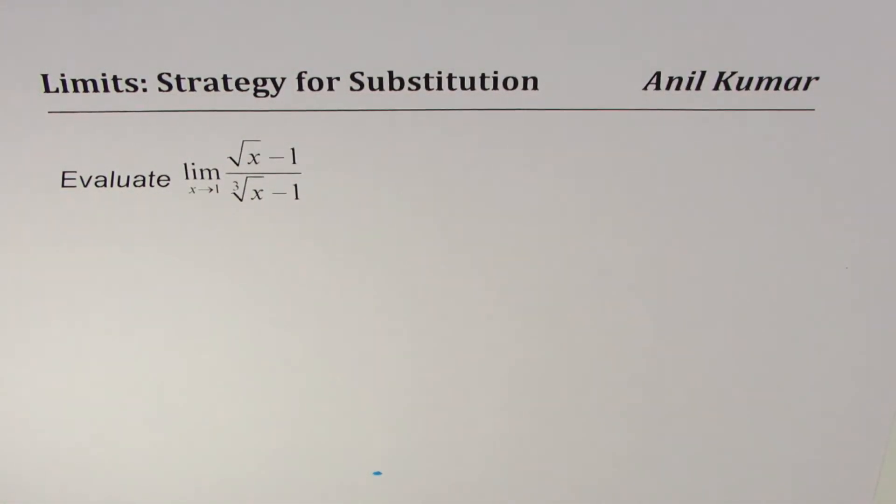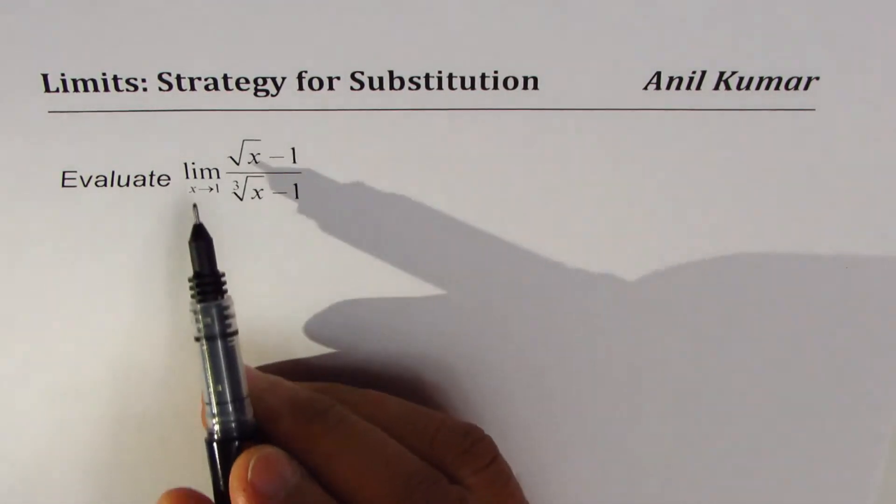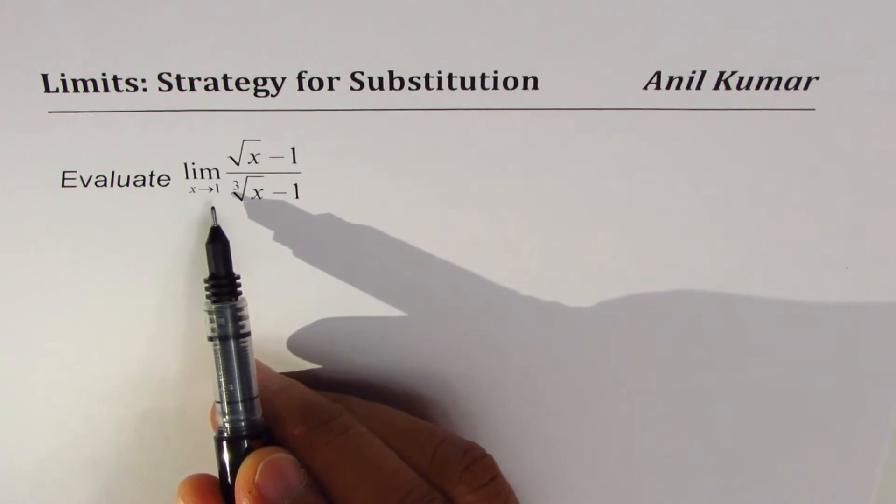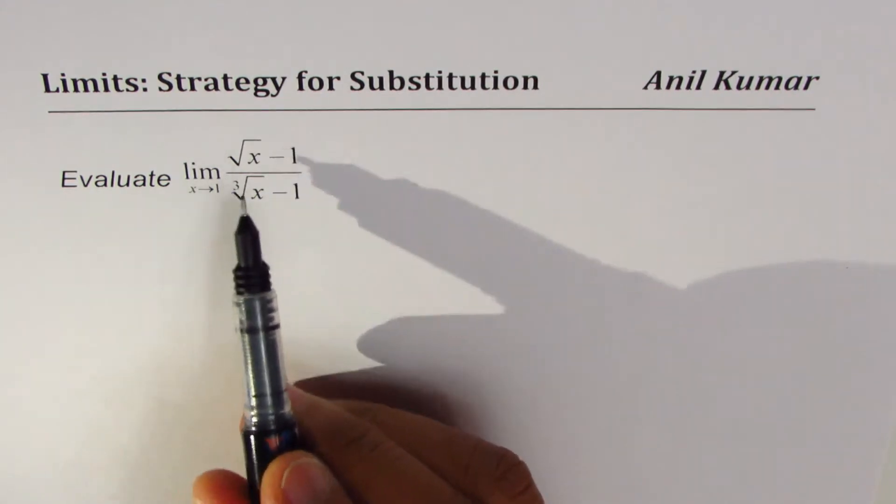I'm Anil Kumar and in this video I'm going to discuss with you a very important strategy which can be used for substitution to find limits. The question here is to evaluate limit when x approaches 1 for square root of x minus 1 divided by cube root of x minus 1.